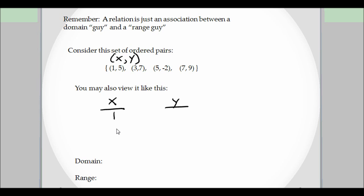So at the x, if you have 1, 3, 5, and 7, so there's our domain: 1, 3, 5, and 7. And then their associated y values would be 5, 7, negative 2, and 9. Now, this is what I gave you in the previous example.